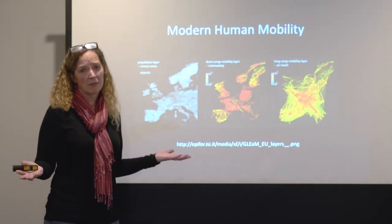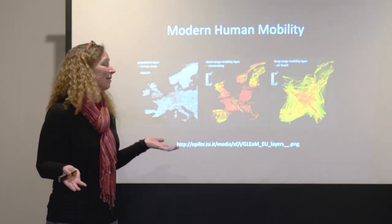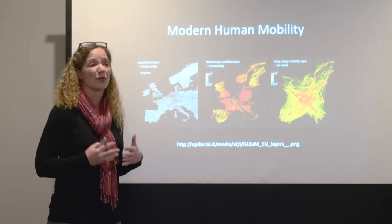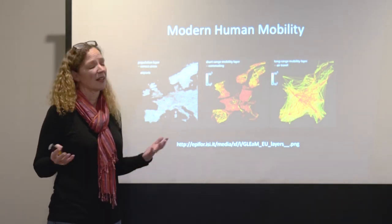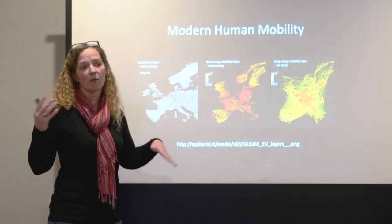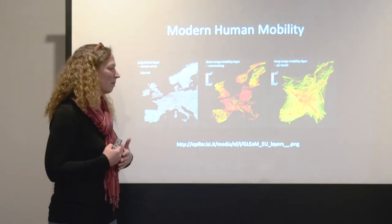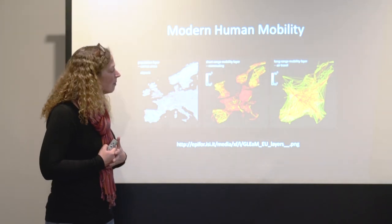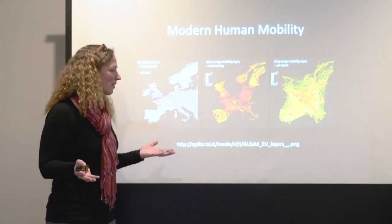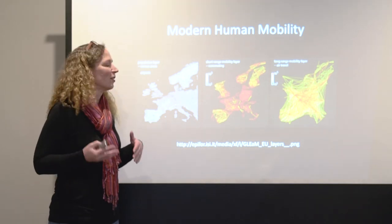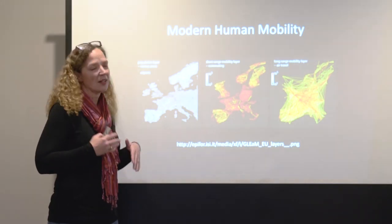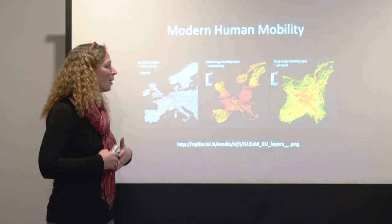Modern people being who we are, we're starting to migrate even more. Today when we start looking at the variation that we see in populations, we're a complete mix as a result of modern mobility. Several hundred years ago you were raised in the same village that your parents were raised in. Today we're spread across the globe, seeing even more of this kind of mixing and layering of different populations.